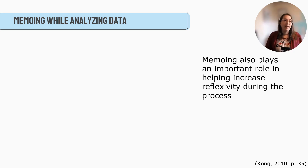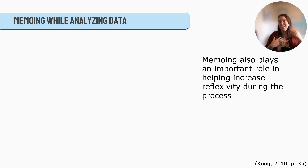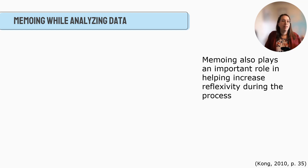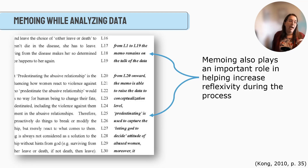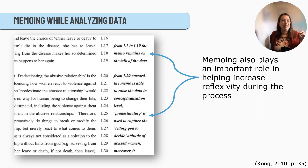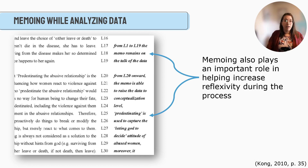Finally, we talk a lot about memoing while analyzing data. Memoing plays an important role in helping increase reflexivity during the process. We talked about reflexivity — that idea that we're always acutely aware of how our own biases can affect the research we're doing, how we're interpreting things, and how the research can also affect us. As you're going through and analyzing, you note patterns but also things it triggers in you or observations you want to remember. There's a great example from Kong that looked at individuals in abusive relationships, where the transcript is on the left and memos on the right show connections between different lines. Memoing helps us structure our data analysis and maintain reflexivity.